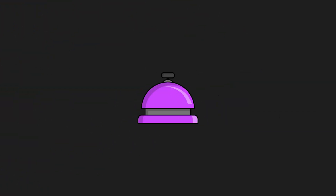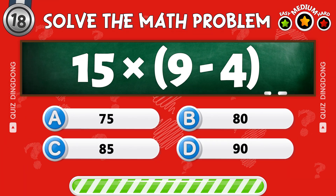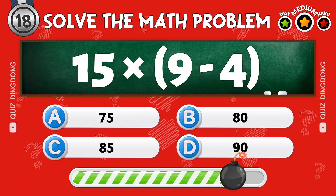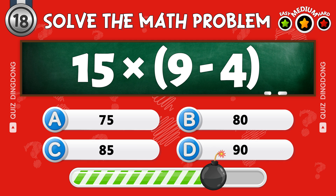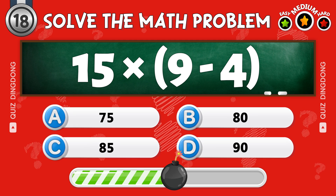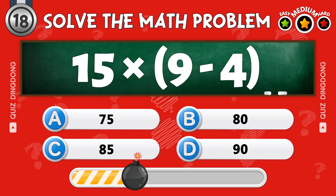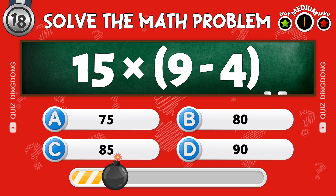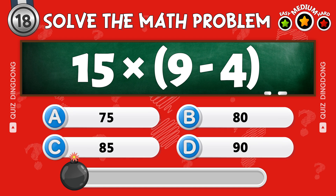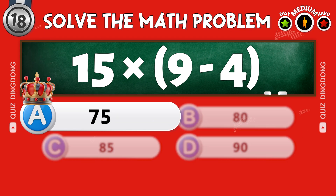Here's a tricky one! What's 15 times 9 minus 4? Perfect! That's 75!